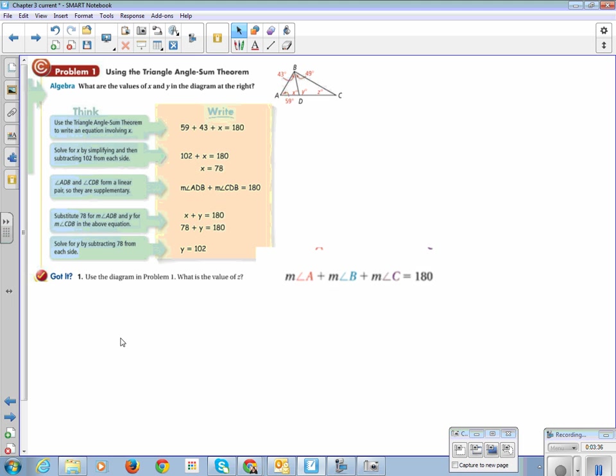So using the triangle sum theorem, what are the values of x and y in the diagram at the right? So we know that the angles in a triangle all add up to be 180. So if I know that this is 59, this little corner here, this angle A is 59.